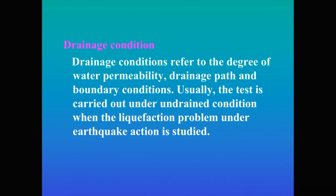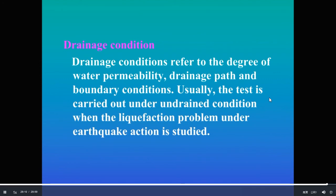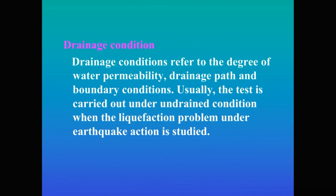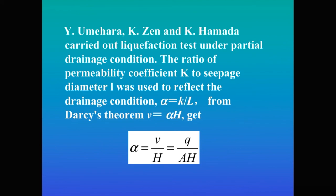Next is drainage condition. Drainage conditions refer to the degree of water permeability, drainage path, and boundary conditions. Usually, tests are carried out under undrained conditions when studying liquefaction under earthquake action. Umehara, Zenkoki, and Hamida carried out liquefaction tests under partial drained conditions. The ratio of permeability coefficient k to seepage diameter L was used to reflect the drainage condition, where alpha equals k over L from Darcy's theory.